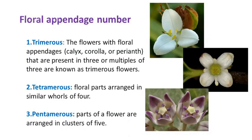Flowers are also identified based on the number of petals. In trimerous flowers, floral appendages such as calyx, corolla or perianth are present in threes or multiples of three. Tetramerous flowers are arranged in similar whorls of four. In pentamerous flowers, floral parts are arranged in clusters of five.